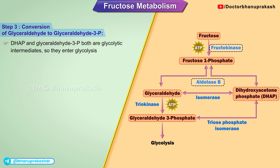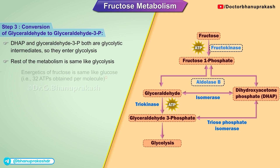DHAP and glyceraldehyde-3-phosphate are both glycolytic intermediates, so they enter glycolysis. The rest of the metabolism is the same as glycolysis, so the energetics of fructose are the same as glucose.